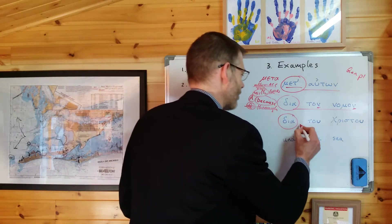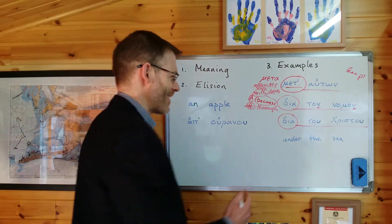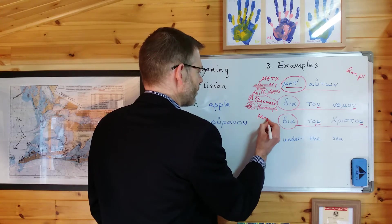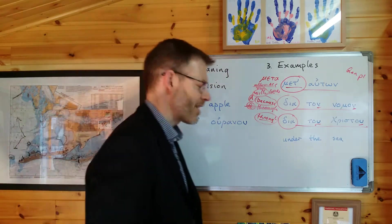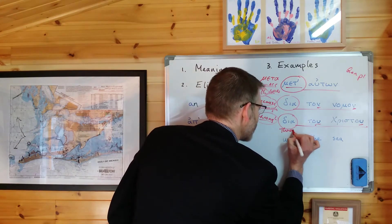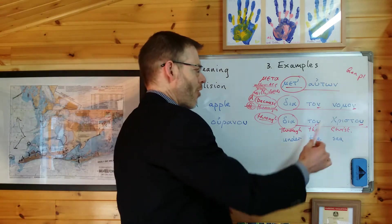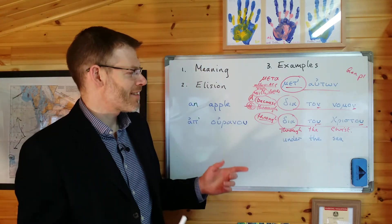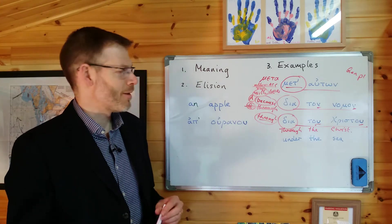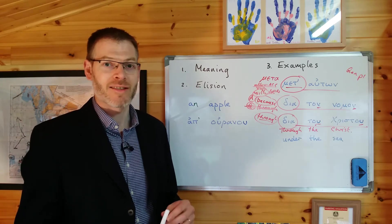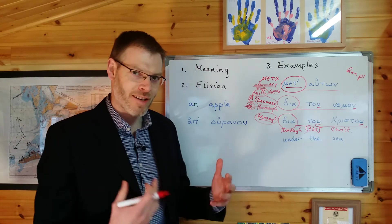Dia again in the third example, but this time we do have a complement in the genitive case — tou Christou — and so this time dia is going to mean "through." Tou Christou comes from ho Christos, which means "the Christ." Through the Christ — now normally when you see a proper name like Christos in Greek you'd expect to see the article, but you wouldn't normally translate that into English. For example with ho theos you would just translate it as "God," not "the God." So probably in this case the way you're going to understand it is "through Christ."